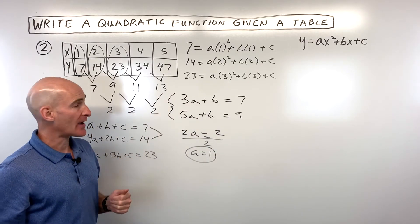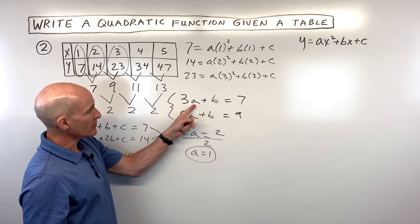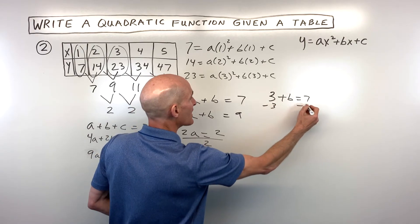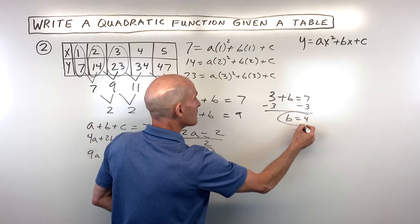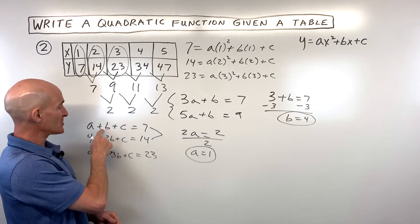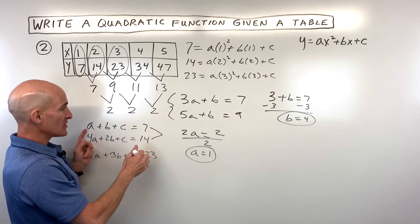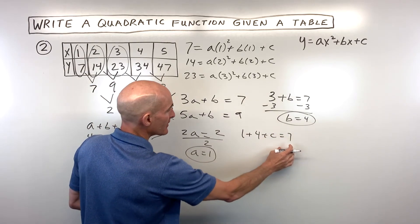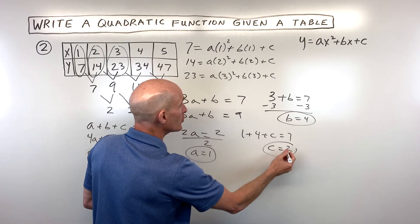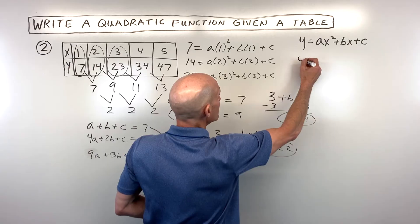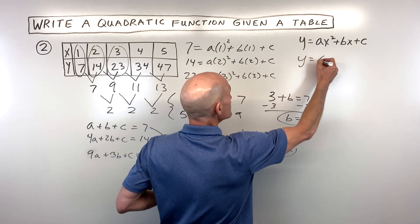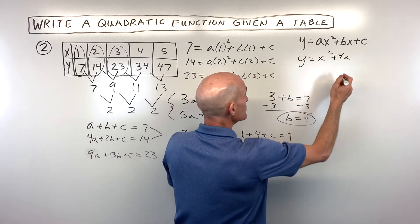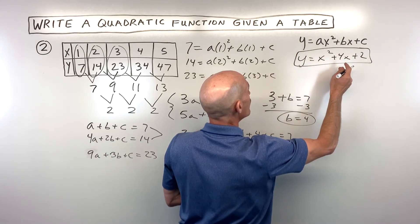Now we back substitute. If a is 1, then 3 times 1 plus b equals 7, so 3 plus b equals 7, meaning b equals 4. Then using the first equation, 1 plus 4 plus c equals 7, which gives 5 plus c equals 7, so c equals 2. Plugging everything in: y equals x squared plus 4x plus 2.